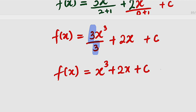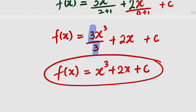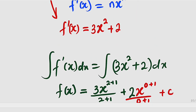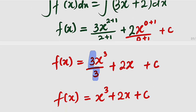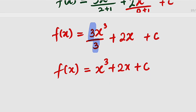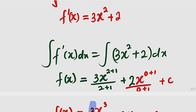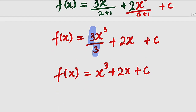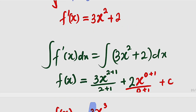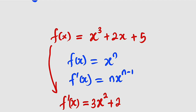Now let us compare this function with what we had initially. From the starting point, we had x to the power of 3 plus 2x plus 5. But in the end, we obtained plus c instead of plus 5. Does it mean that this 5 is equivalent to c? Because c stands for a constant, and 5 here is also a constant. So let us find out whether c is equivalent to 5.